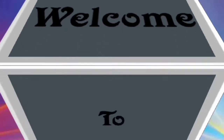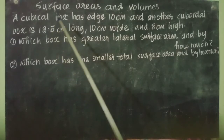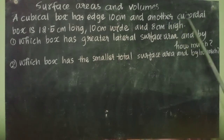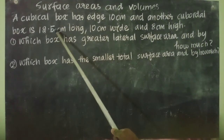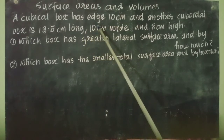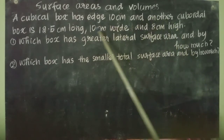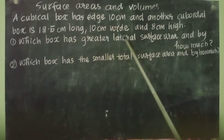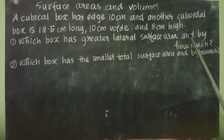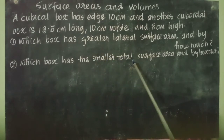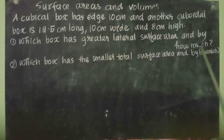Dear students, welcome to Blackboard. A cubical box has edge 10 cm and another cuboidal box is 12.5 cm long, 10 cm wide and 8 cm high. Which box has greater lateral surface area and by how much? Which box has the smaller total surface area and by how much?